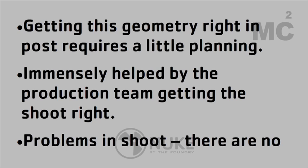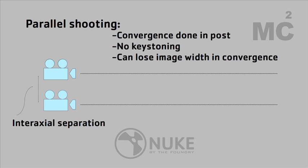Getting people who actually know what they're doing will save an enormous amount of pain afterwards. Problems in the shoot have no easy fixes beyond adjusting the convergence point and dealing with minor camera misalignment. Actual failures to correctly appreciate the geometry of the cameras relative to the scene are really hard to correct later. Some other terms you'll hear a lot: parallel shooting versus converged shooting.